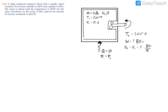To find the work, we apply the First Law of Thermodynamics: the change in internal energy equals heat transfer minus work. Since the container is insulated, heat transfer cancels out, leaving ΔU = −W. Rearranging, we get W = U1 − U2, so we need to find U1 and U2.